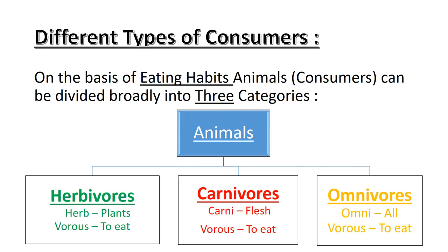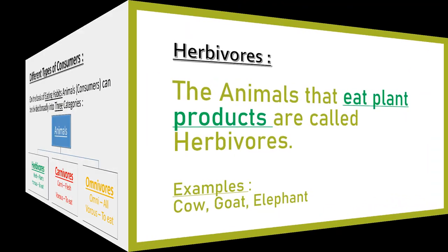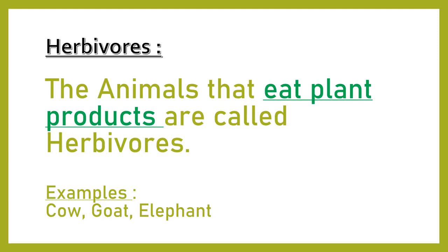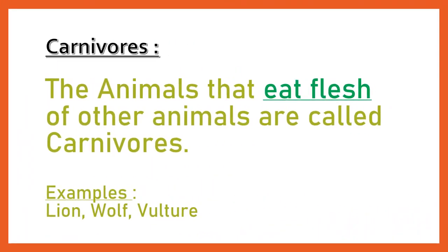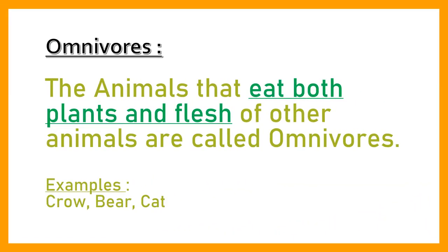Let us look at their definitions along with a few examples. Herbivores: the animals that eat plant products are called herbivores. Carnivores: the animals that eat flesh of other animals are called carnivores. Omnivores: the animals that eat both plants and flesh of other animals are called omnivores. Examples: crow, bear, and cat.